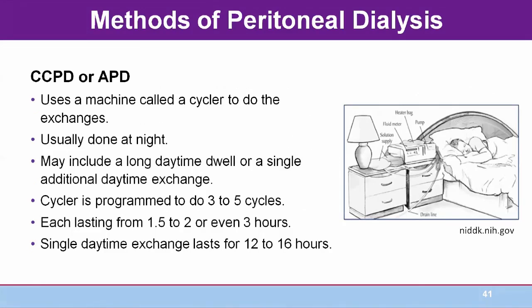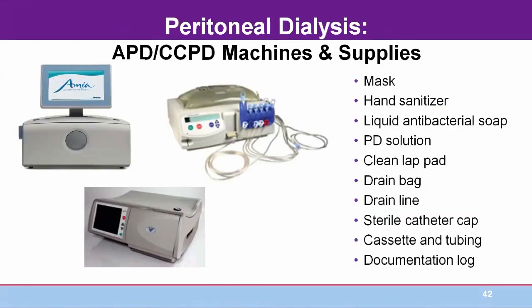The most common method of PD is Continuous Cycling Peritoneal Dialysis, CCPD, or automated peritoneal dialysis. The benefit of CCPD is less work for the patient and a lower risk for peritonitis due to fewer connections and disconnections. Examples of small and portable PD machines average around 25 pounds in weight and 2.5 cubic feet in size.